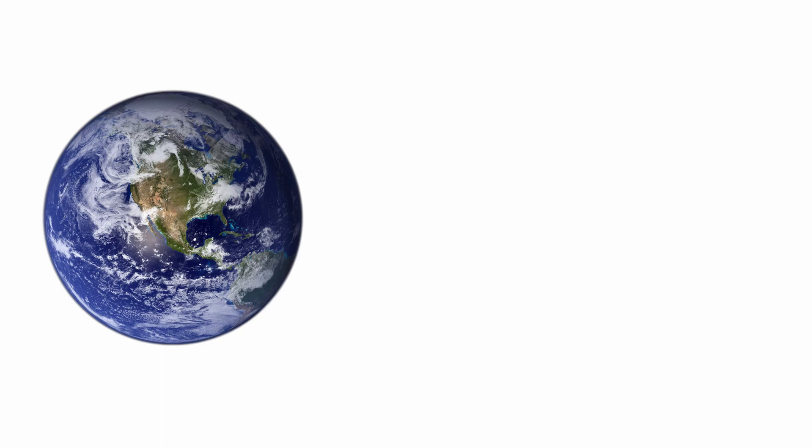I think the best example to dive into dimensionality reduction is our planet. Our planet is this three-dimensional object, but displaying three-dimensional data is often inconvenient. This is why we tend to use such two-dimensional representations of our planet.